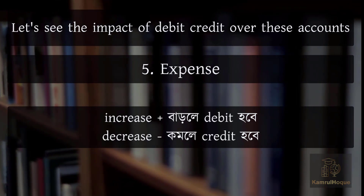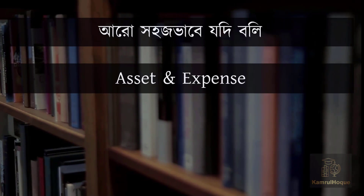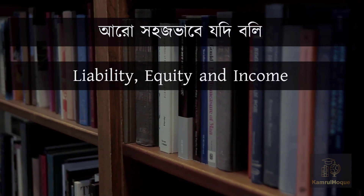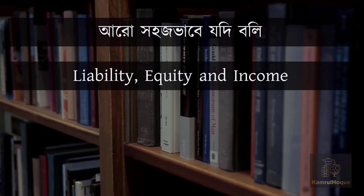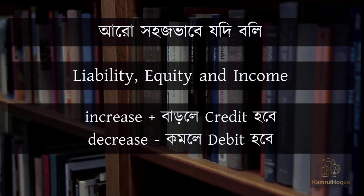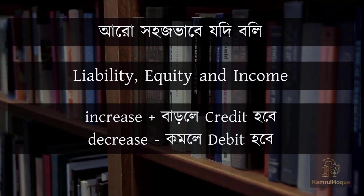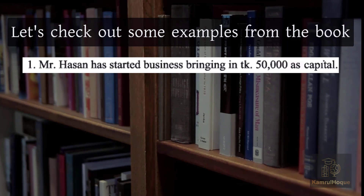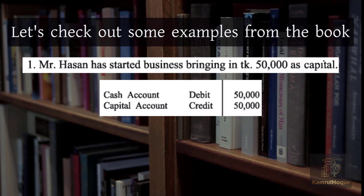For Expense: increase is debit, decrease is credit. Asset increases are debited and decreases are credited. For Liability and Income, the same rule applies: increase is credit, decrease is debit. For example, the bank account is an asset, so it is recorded by debit when it increases.